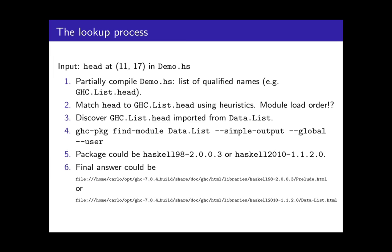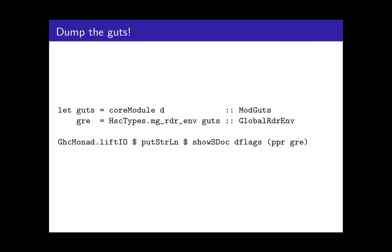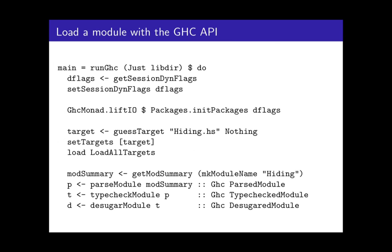Audience question: how much of the compilation pipeline will you run? In the example you have the parser, type checker, and desugarer — but just running up to the renamer should be enough, right? As far as I could tell, to get the mod_guts you need more. But you don't really need the mod_guts — you just need the reader environment, so once you rename you should have that. I think I tried doing less of this and didn't get the names I wanted, but that could be wrong because this was about a year ago. What we should try is, instead of doing the full type-check-module, manually run only the renamer and then extract from there.